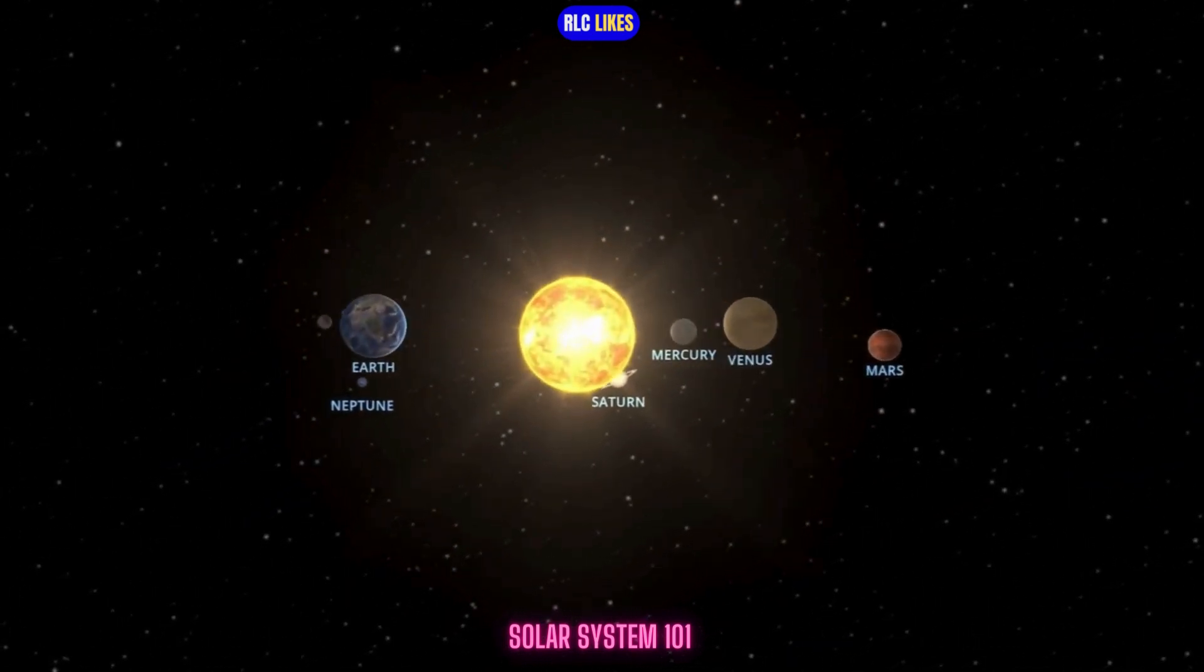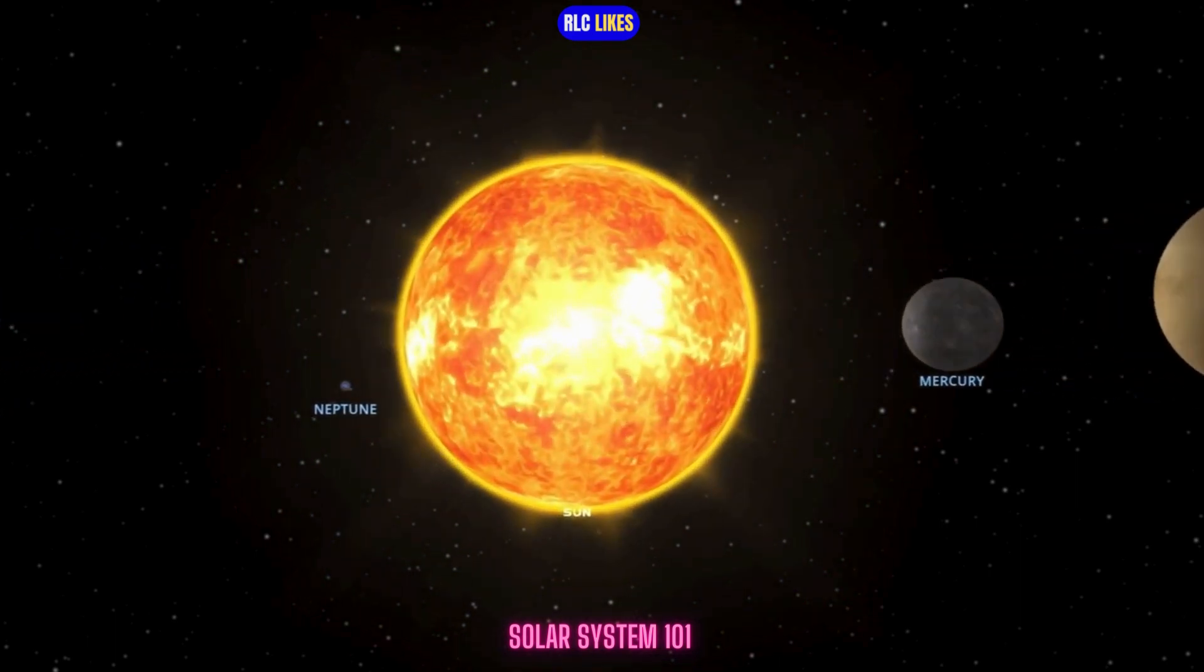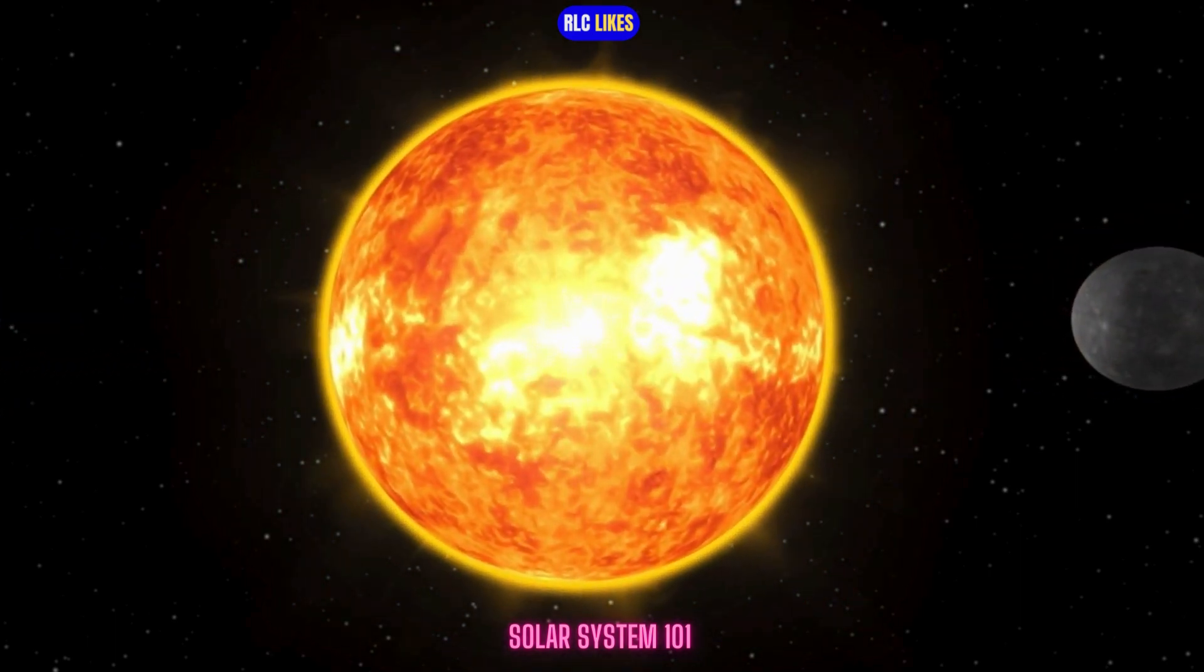Our solar system is the only one we know of that has a planet that supports life. So far, we only know of life on Earth, but we're looking for life on other worlds.